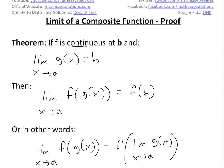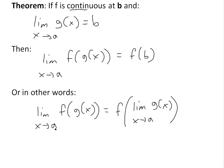— equals f(b). Or, if you rewrite it: the limit as x approaches a of f(g(x)) equals f of the limit as x approaches a of g(x). So basically it's stating that the limit of a composite function equals that composite function but with the limit moved inside. That's all it is.